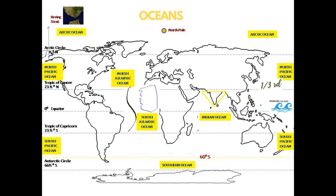On the west of the Atlantic Ocean, it has North and South America, and on its east, it has Europe and Africa. The next is Indian Ocean. This is the only ocean named after a country. It's triangular in shape and bounded by Asia in the North, Africa in the West, and Australia on the Eastern side.